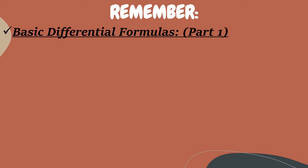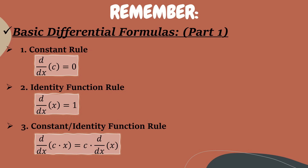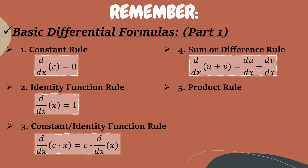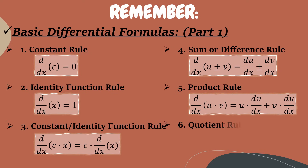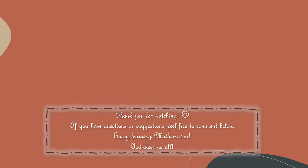To summarize the first part of the basic differentiation formulas: Rule 1 is the constant rule, Rule 2 is the identity function rule, Rule 3 is the constant identity function rule, Rule 4 is the sum or difference rule, Rule 5 is the product rule, and Rule 6 is the quotient rule. Hopefully you learned something from this first part. Stay tuned for part 2 of the basic differentiation formulas. Thank you for watching — if you have questions or suggestions, feel free to comment below. Enjoy learning mathematics. God bless us all!